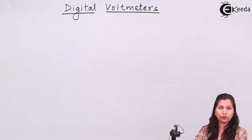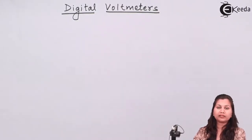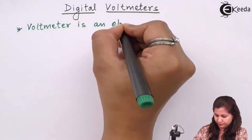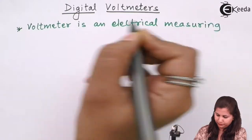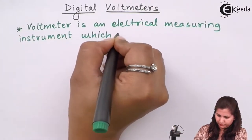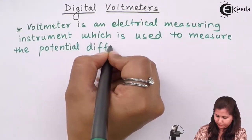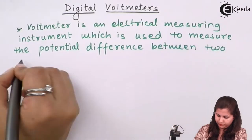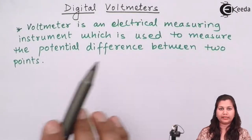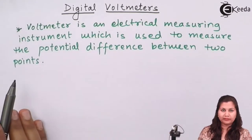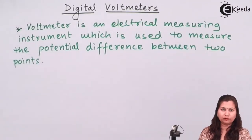Before starting with the digital voltmeters, first we will study what a voltmeter is. A voltmeter is an instrument which is used to measure the potential difference between two points. The voltage measured can be an AC voltage or a DC voltage. There are two types of voltmeters: the analog voltmeter and the digital voltmeter. Both can measure AC and DC voltages.